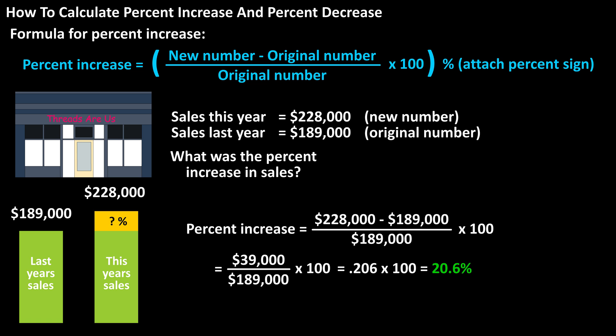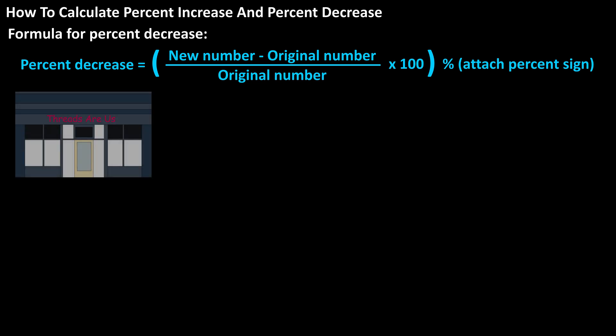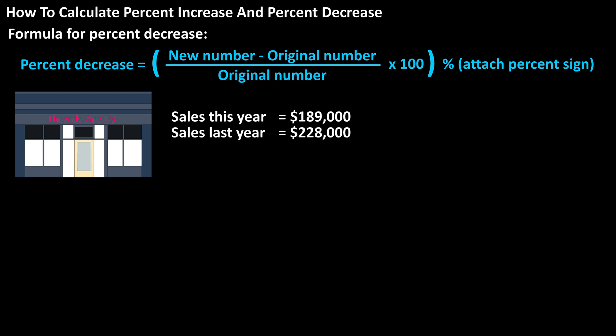Now for percent decrease. The formula for percent decrease is actually the same exact formula as percent increase. If you get a negative answer from the formula, then there's a percent decrease. Using the same numbers as before, but now last year's sales were $228,000 and this year's sales were $189,000. So the new number is $189,000 and the original number is $228,000.